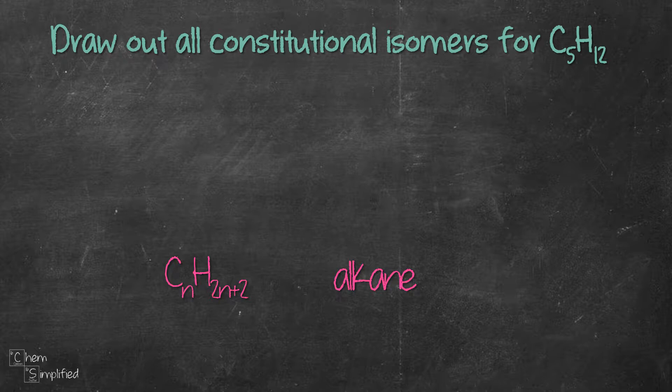We're gonna use a systematic way of drawing the isomers, that way we won't accidentally leave out any structures. Let's start by drawing a 5 carbon chain, meaning 5 carbons connected straight in a row.